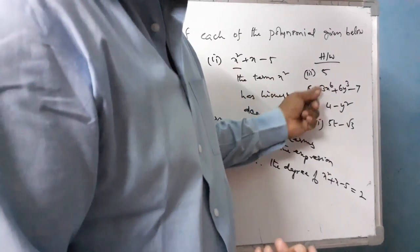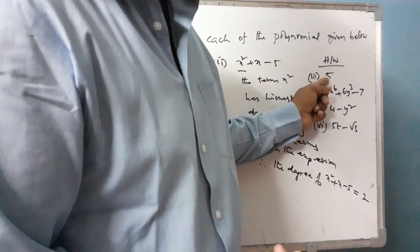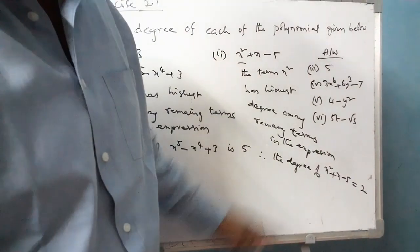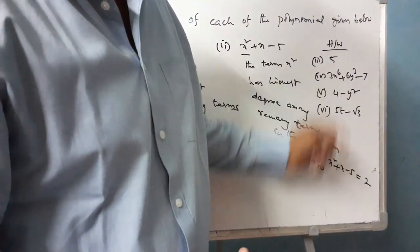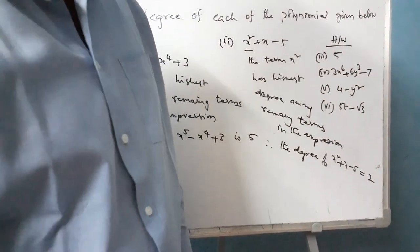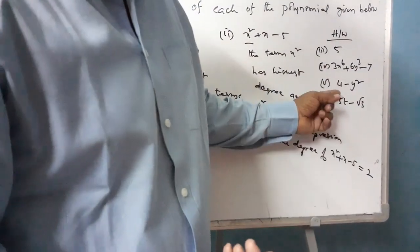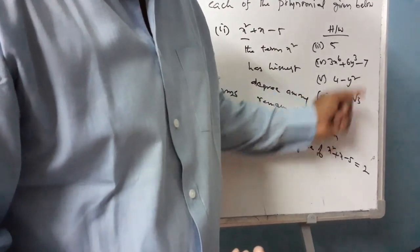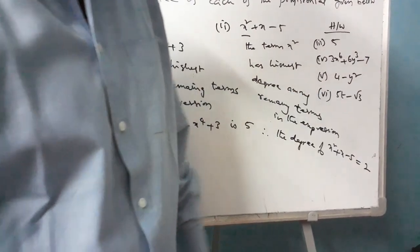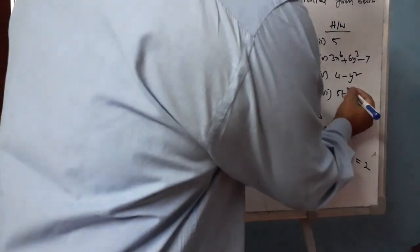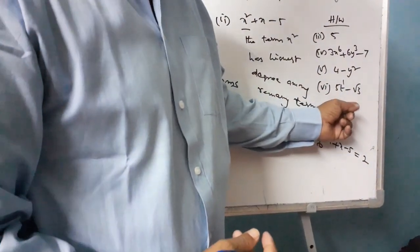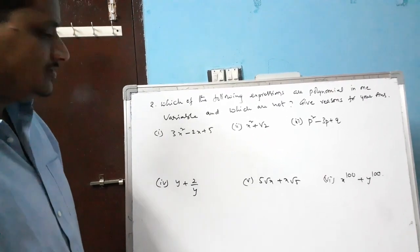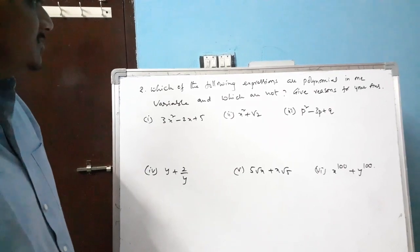Take for homework the third one: 5 is nothing but 5 times x to the power of 0, so 0 is the degree of the polynomial. The highest power of the next polynomial is 6, so the degree is 6. For y squared, the degree is 2. For t to the power of 1, the degree of the polynomial is 1.